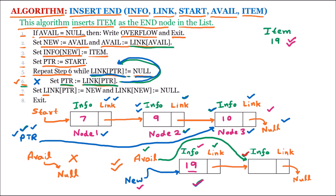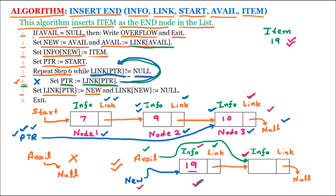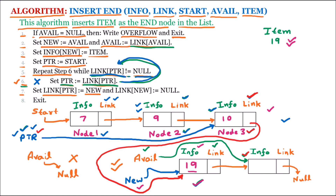Line number 7 says: set link of ptr equal to new. We know that ptr is a pointer pointing to node number 3, and the link part is set equal to new. So link of ptr is having the value which is with new, and new is having the address of the node taken from the available list, which is the node containing 19. The previous value was discarded. Afterward, set link of new equal to null. The new node's link part will be equal to null, so the previous value is discarded.